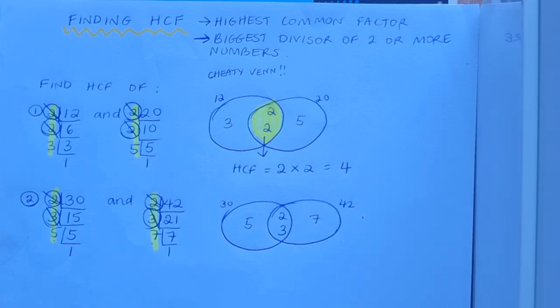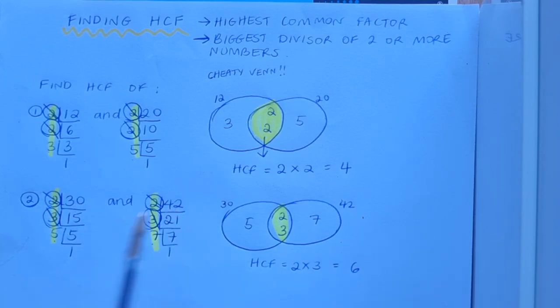And again then don't forget the HCF can be found by getting the product of those numbers in the intersection. So in this case it'll be found by using 2 by 3. So my HCF is 6. What does that mean? 6 is the biggest number that will go into 30 and into 42.